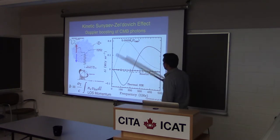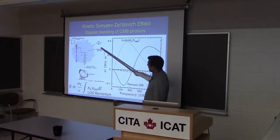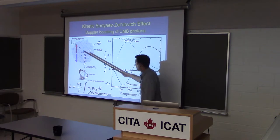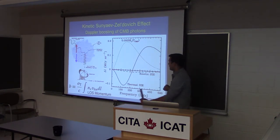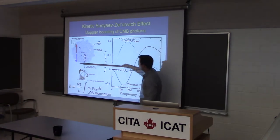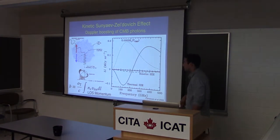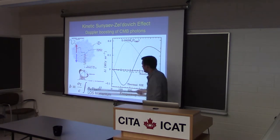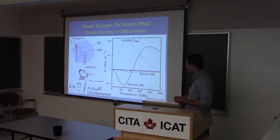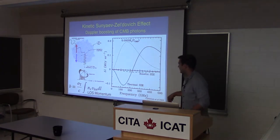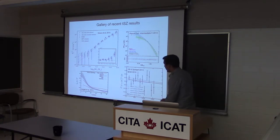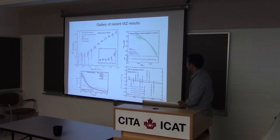Then there's the kinetic SZ—Doppler boosting of CMB photons. If this hot ionized gas has some peculiar motion with respect to the CMB rest frame, you Doppler boost those CMB photons depending on whether it's moving towards or away from us, and you see a temperature shift proportional to the peculiar velocity. So here you're measuring the integrated line-of-sight momentum—density times line-of-sight velocity. These effects have been seen in abundance; KSZ more recently than TSZ.